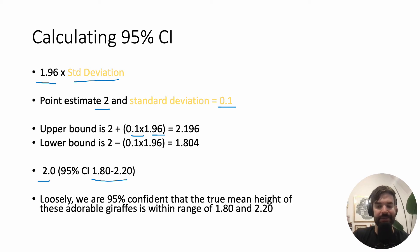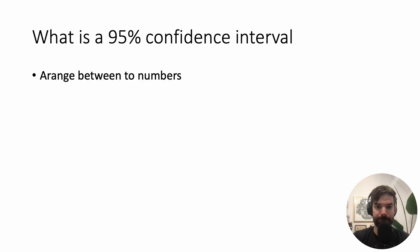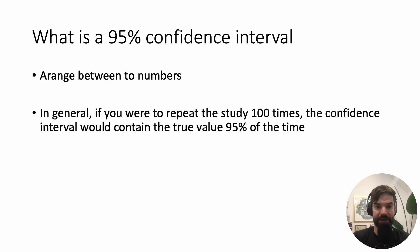Loosely, in this case — if this was about the giraffes — we could say we are 95% confident that the true height of these adorable giraffes ranges between these two numbers. That's not perfect and a statistician will quibble with that, but this is an introductory talk. So: a 95% confidence interval is a range between two numbers, and if the study were repeated 100 times, the confidence interval would contain the true value 95% of the time.